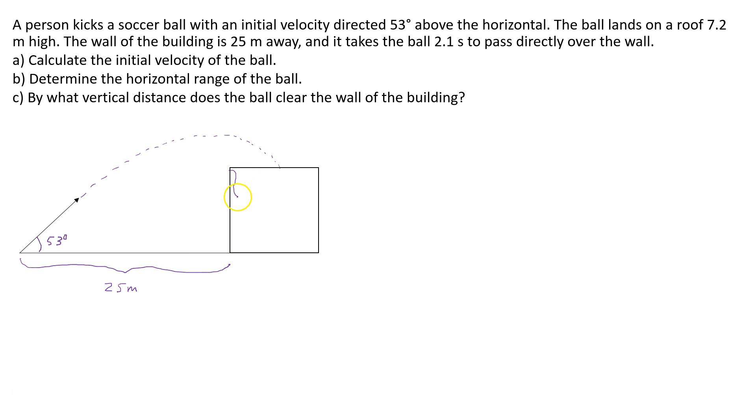The height of the roof is 7.2 meters. And we're trying to find the initial velocity of the ball. So let's now write down the givens. When doing projectile motion questions, it's important to separate the motion into a horizontal motion and a vertical motion.